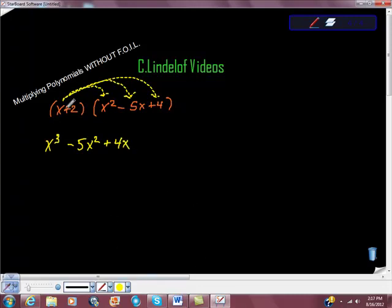The next thing I'm going to do, I've used this first term. This first term has been multiplied by everything over there. I'm finished with that term. So now I'm going to go over to my next term, which is the 2. I'm going to multiply this times this, then this times this. I'm making sure I multiply this term by everything in the second part. So 2 times x squared is positive 2x squared, 2 times negative 5x is negative 10x, and 2 times positive 4 is positive 8.